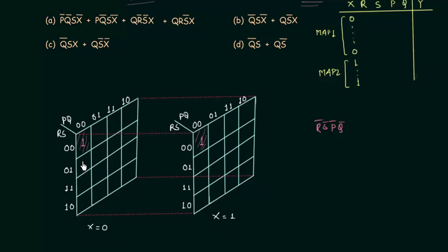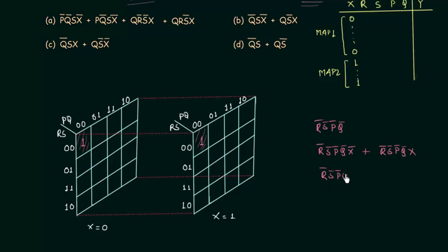If we combine the two cells individually: from the first cell (X=0) we get R', S', P', Q', X'; from the second cell (X=1) we get R', S', P', Q', X. Taking R', S', P', Q' as common, we get R'S'P'Q'(X' + X), which equals R'S'P'Q'. This demonstrates how combining corresponding cells across both maps simplifies the expression by eliminating X.